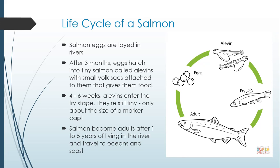After 3 months, the eggs hatch into tiny salmon called alvins. An alvin has a small sack attached to them called a yolk sack, which gives them food. After 4 to 6 weeks, they enter the fry stage, which means they've lost the yolk sack and can now eat food on their own. They're still tiny — about the size of a marker cap.